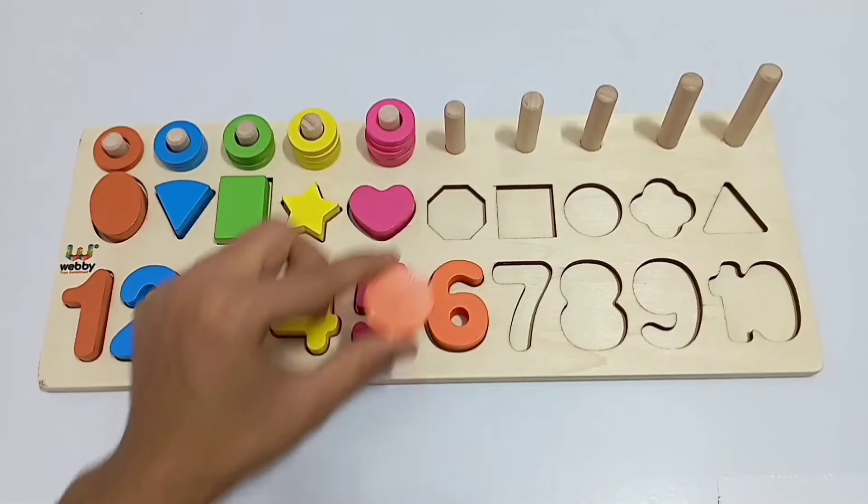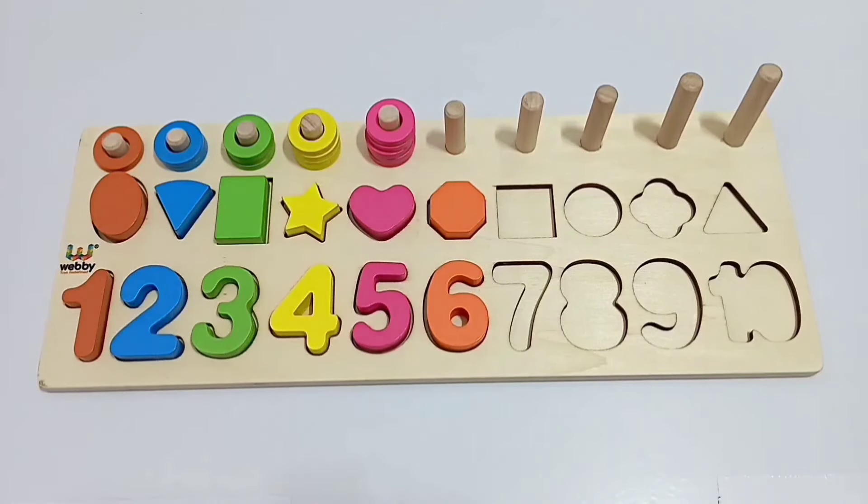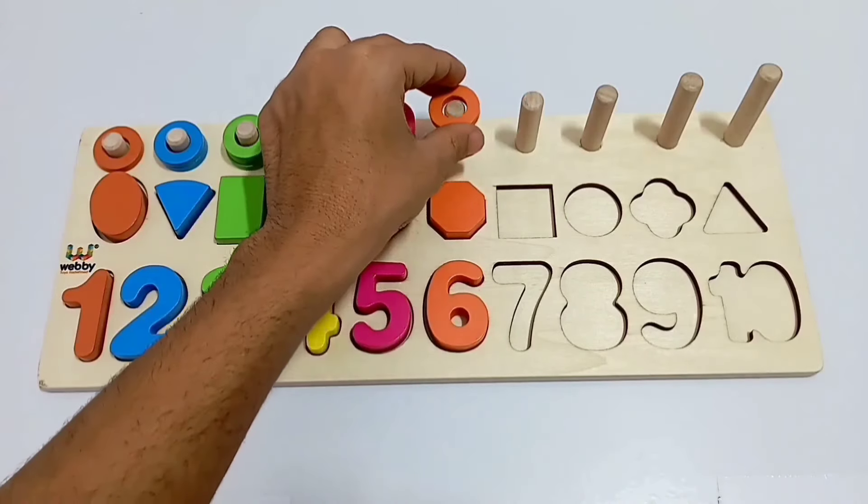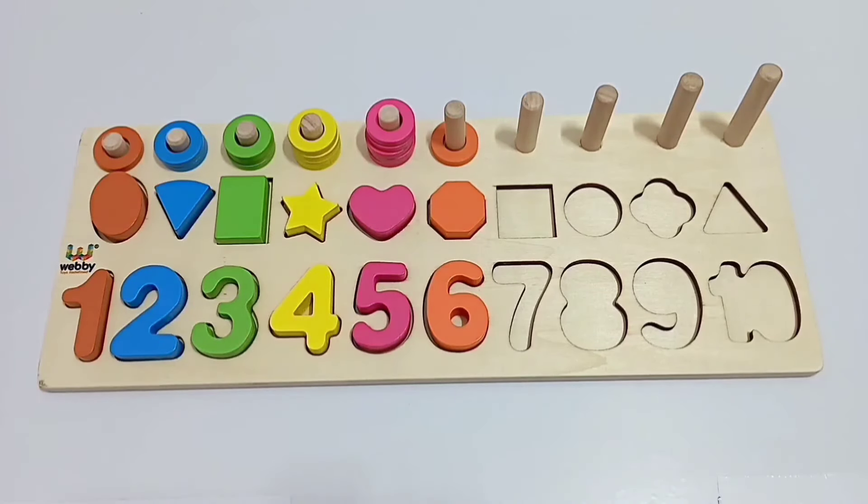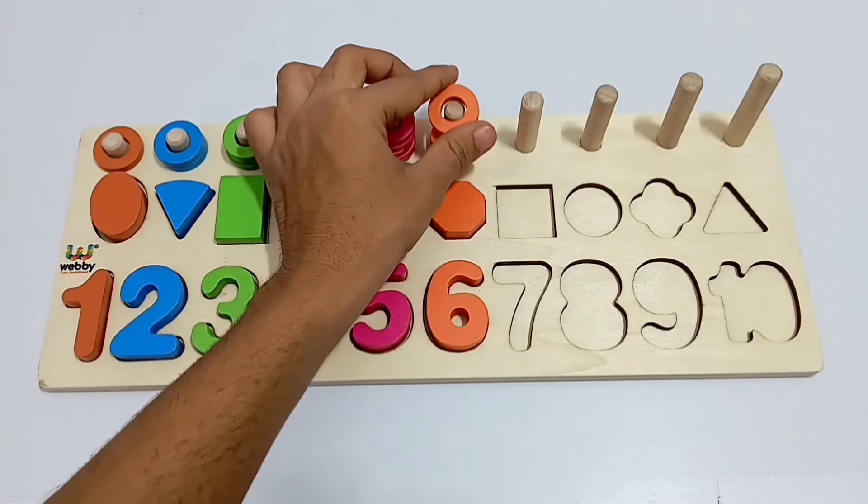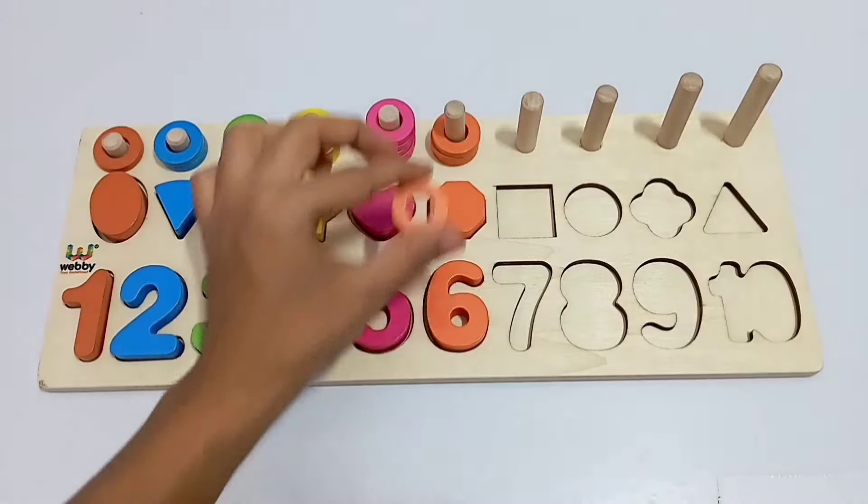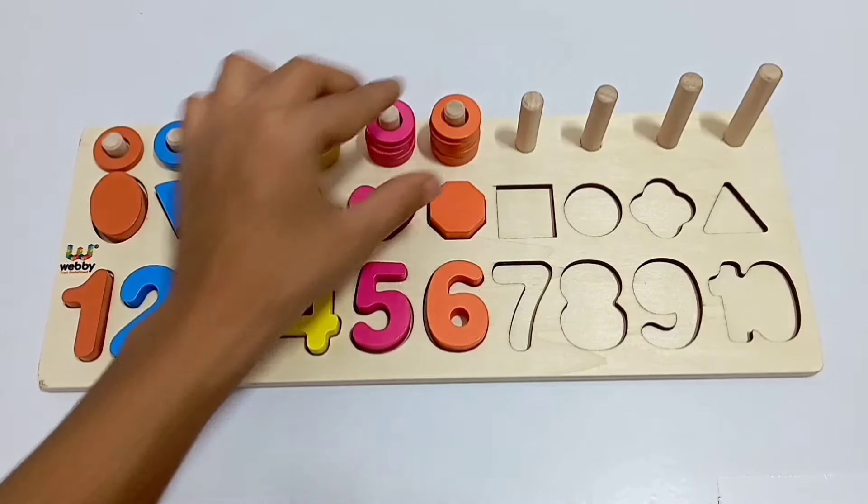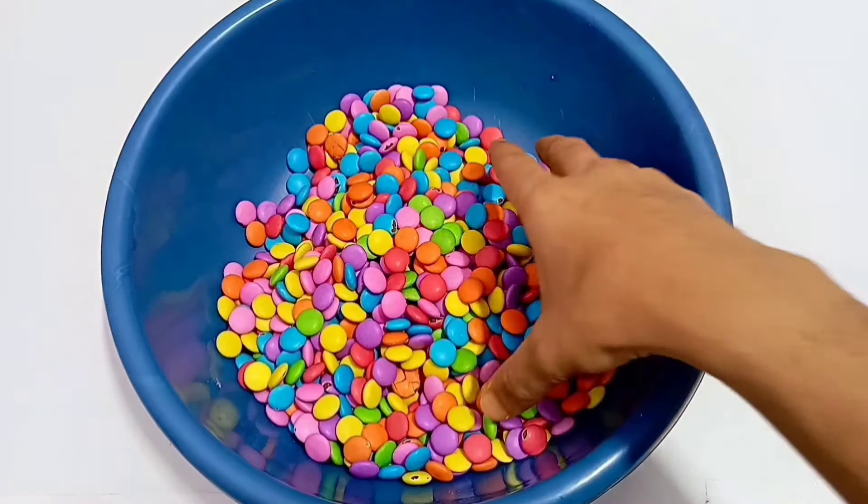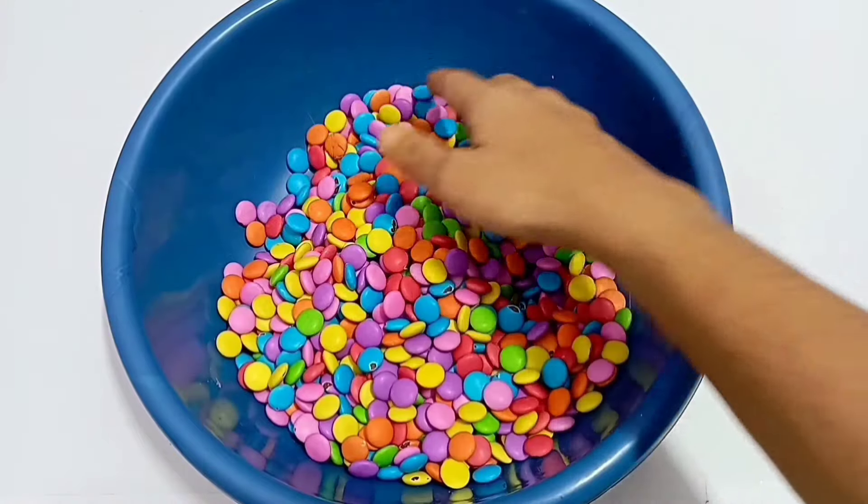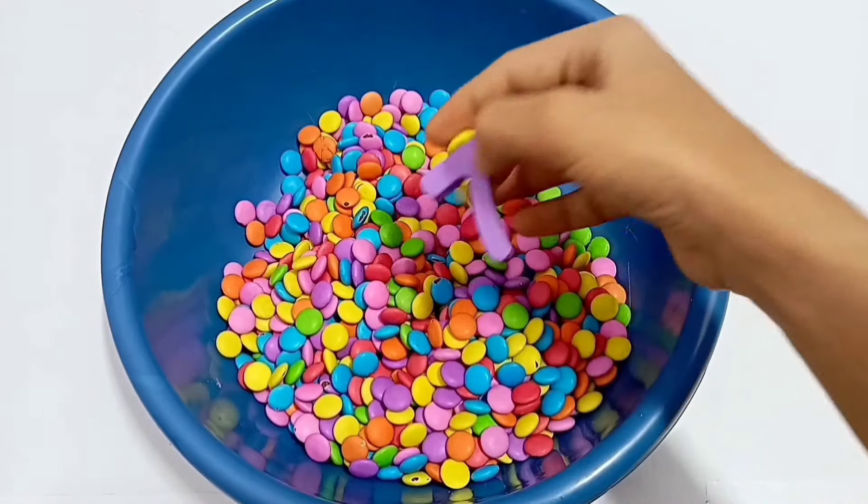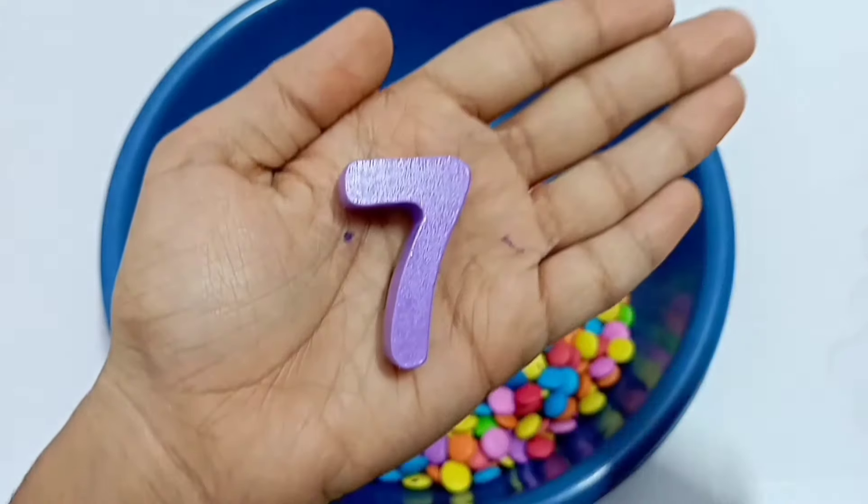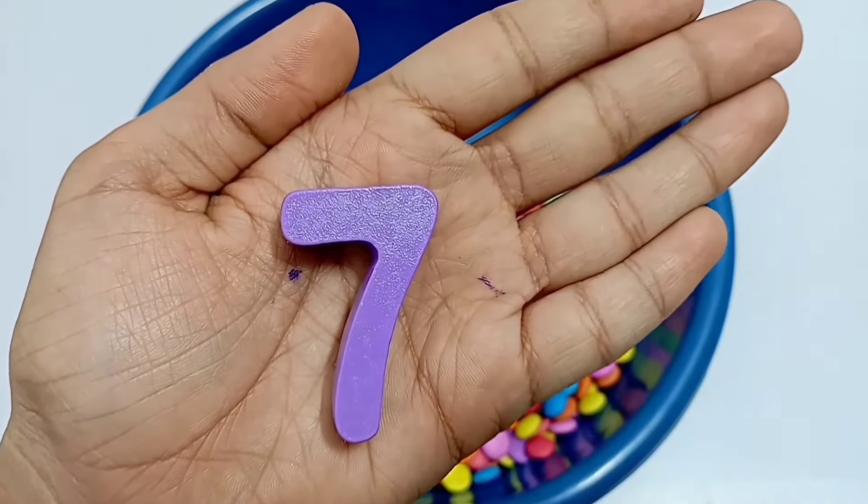Octagon shape. One. Two. Three. Four. Five. Six. Seven.